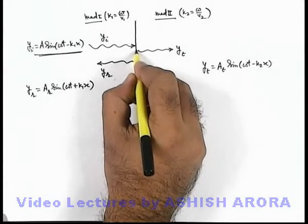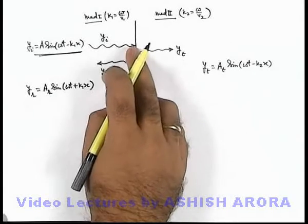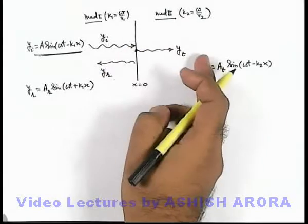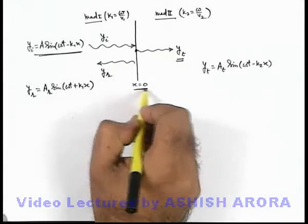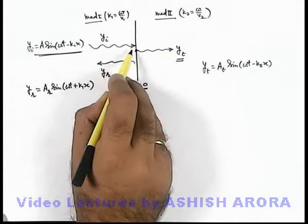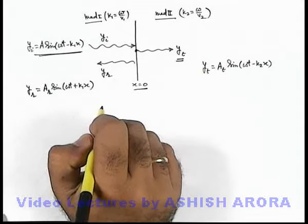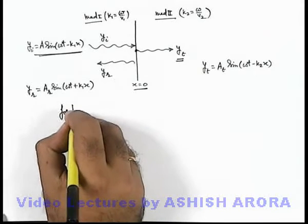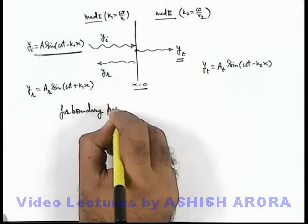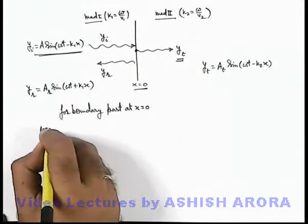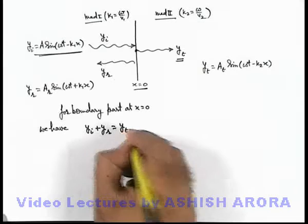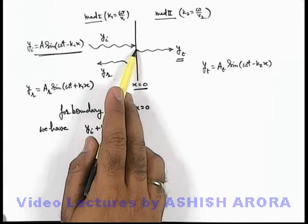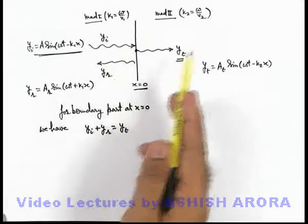Now we can talk about the particles which exist on the boundary. The boundary particles, when viewed from the side of medium 2, appear to oscillate under the influence of only the transmitted wave. When we see the particles at x = 0, that is on the boundary from the side of medium 1, these oscillate under the influence of both the incident and reflected waves. So for boundary particles at x = 0, we have y-i + y-r = y-t, because the displacement of a boundary particle must remain the same whether viewed from either side.